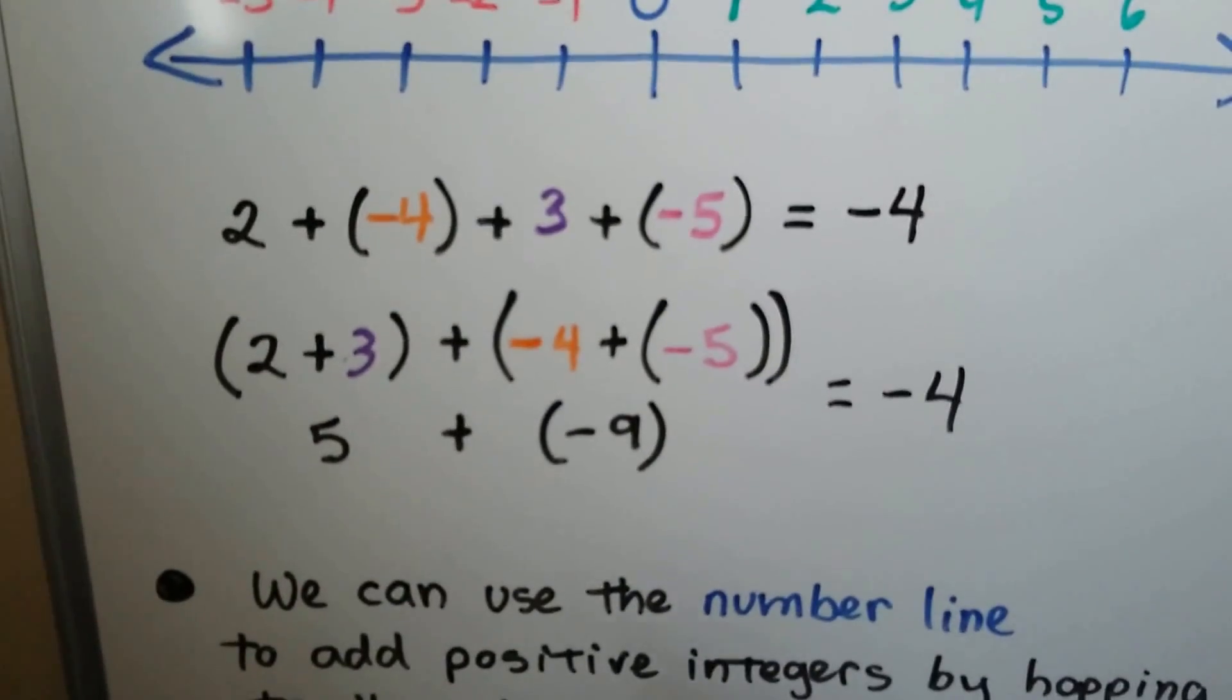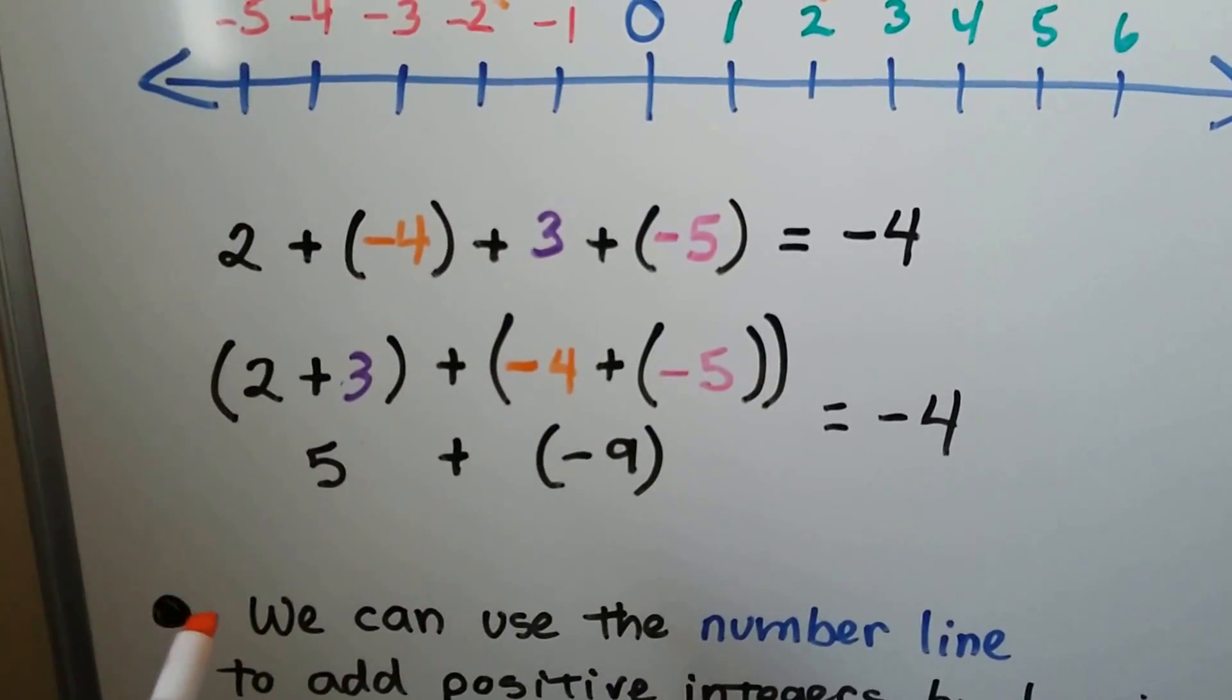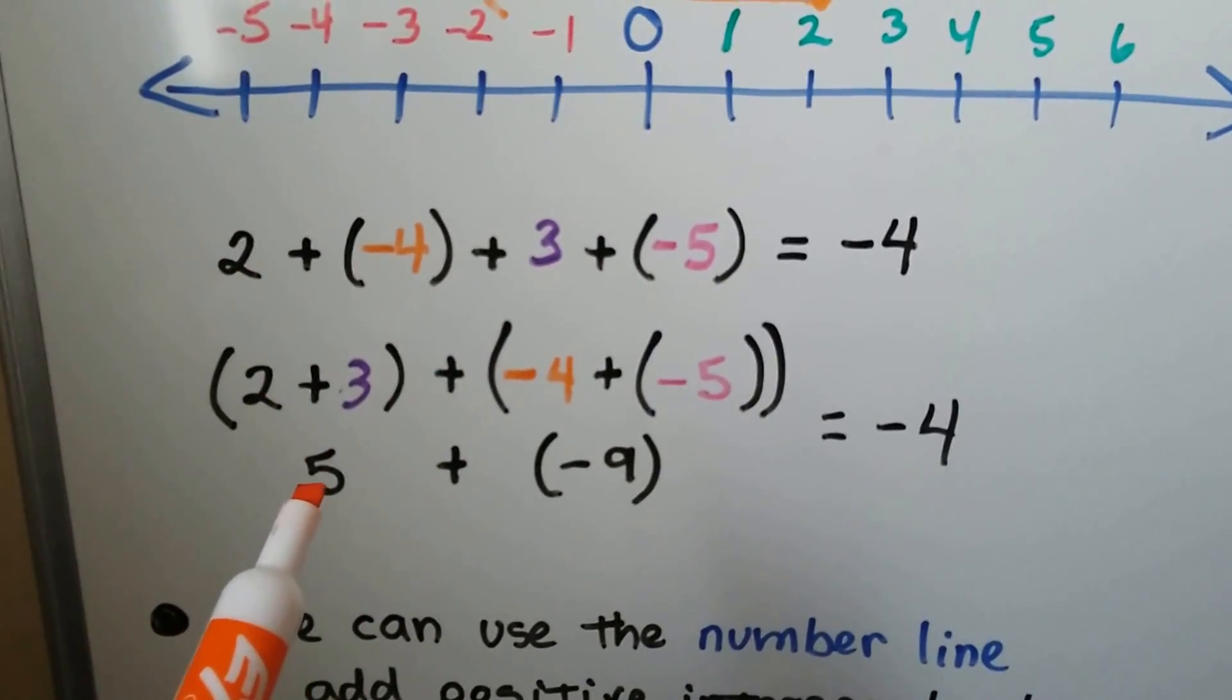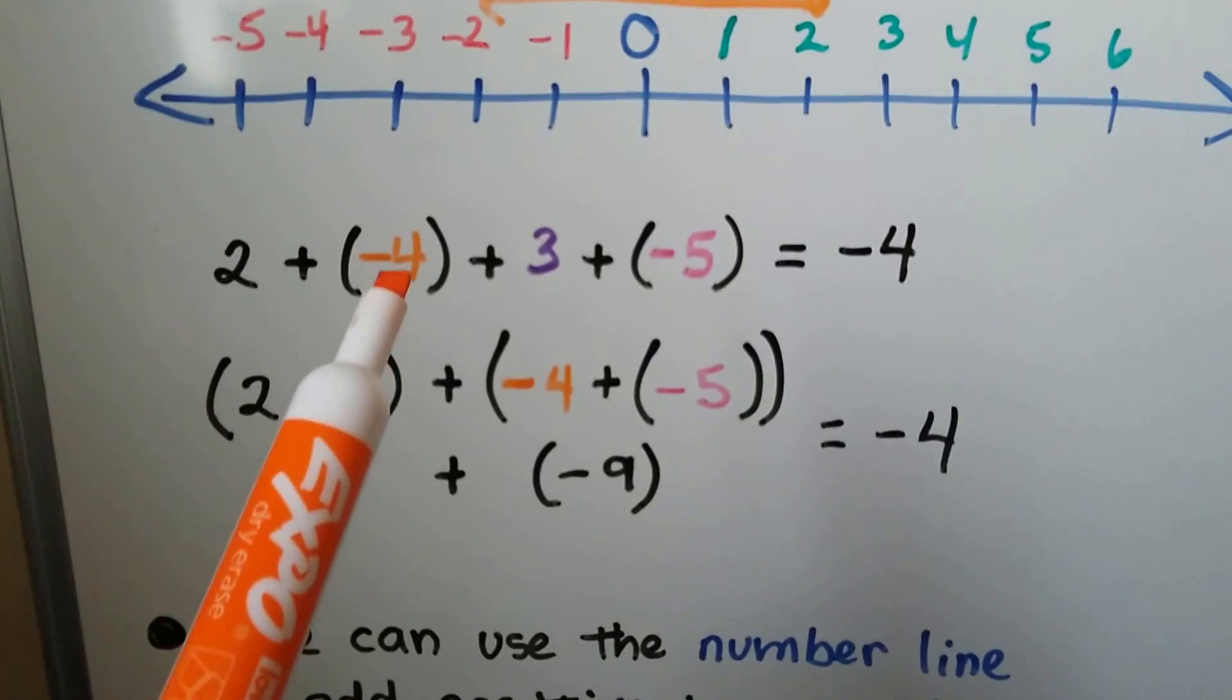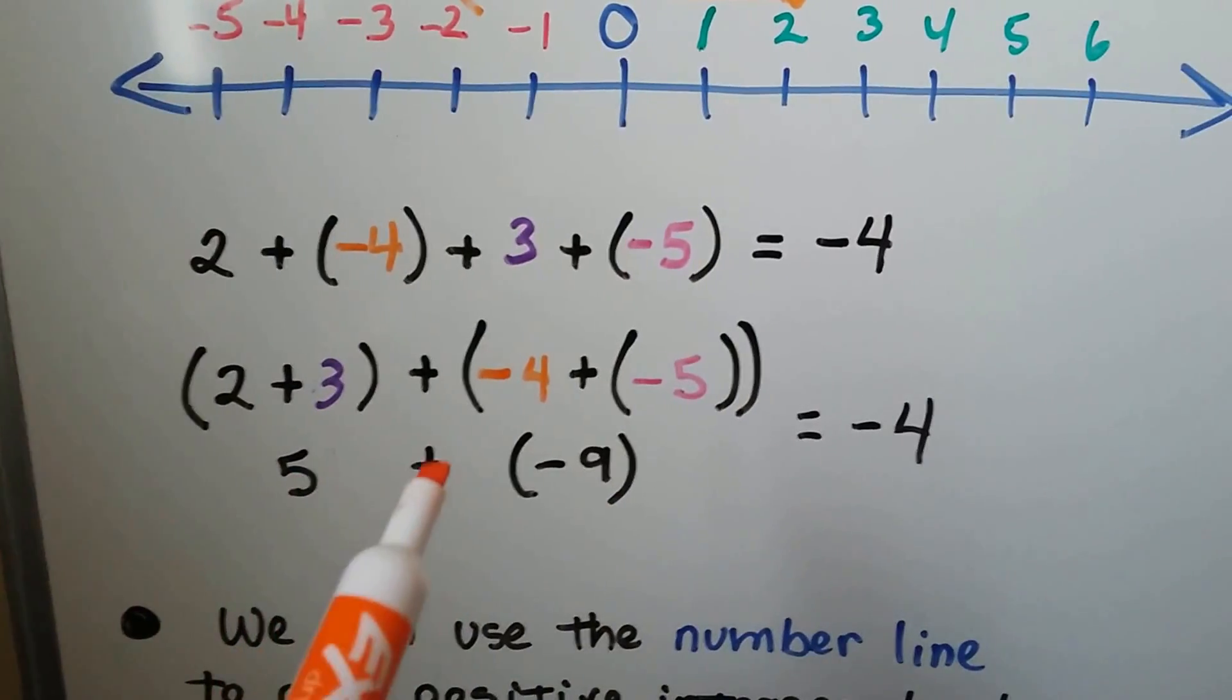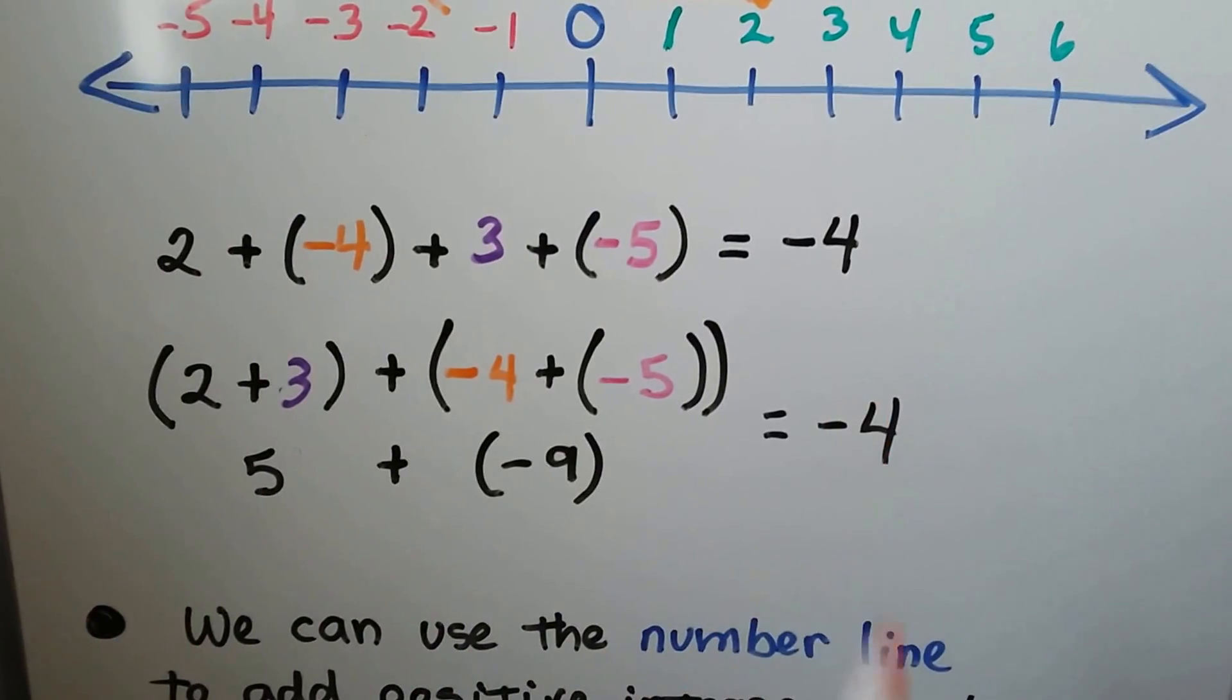We can also group the like terms together. We have a positive 2 and a positive 3. We can add those together and get a 5, a positive 5. We can group the negative 4 and the negative 5 together to get a negative 9 and 5 plus a negative 9 is a negative 4.